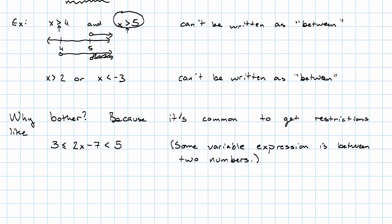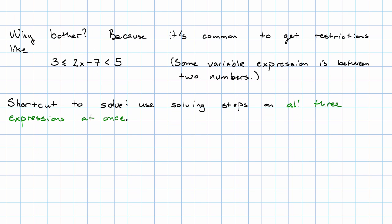And using this between notation, we have a shortcut way of solving this. The shortcut is to use solving steps on all three expressions at once. Now, notice that that's not required. What's really going on is that we're splitting this up into an and inequality. 3 is less than or equal to 2x minus 7, and 2x minus 7 is less than 5.